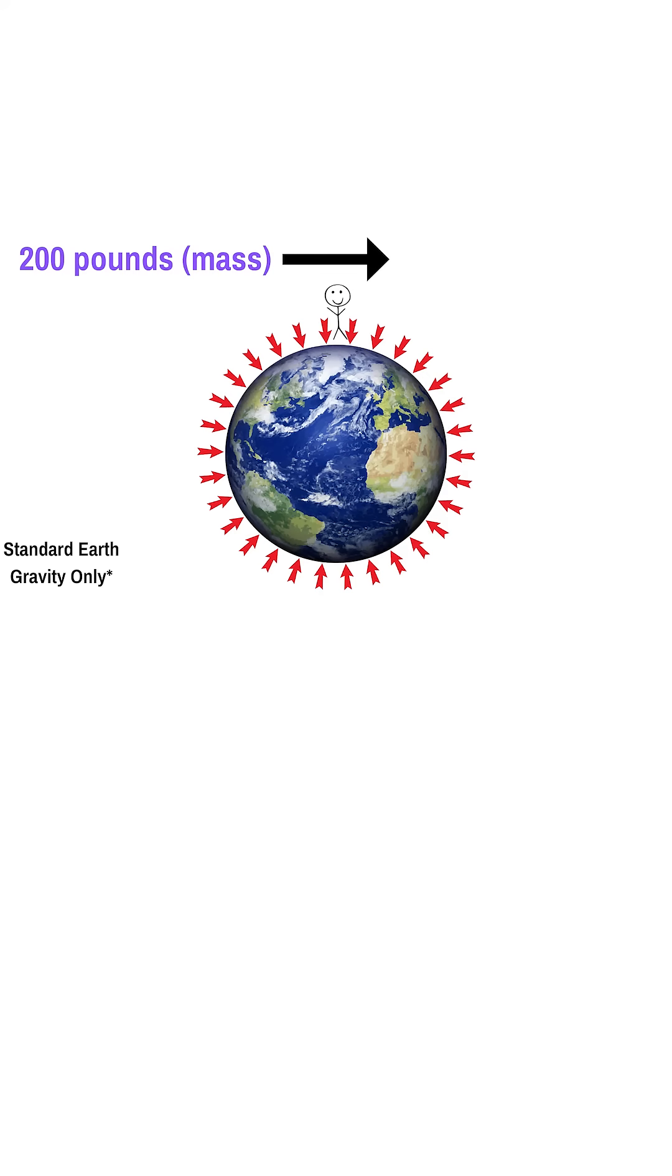In standard gravity on Earth, based on the definition of each, one pound of mass weighs one pound of force. That's why people got away with using just a single unit to refer to mass and weight interchangeably. Basically, everything was done on Earth in roughly standard gravity.